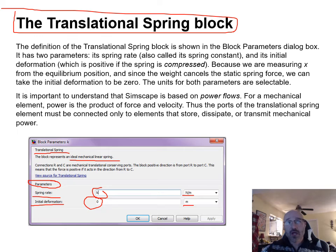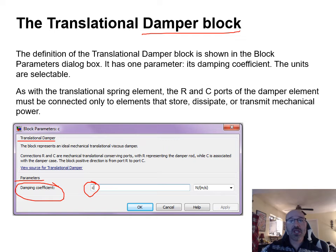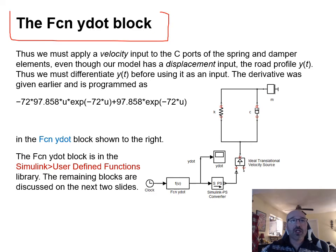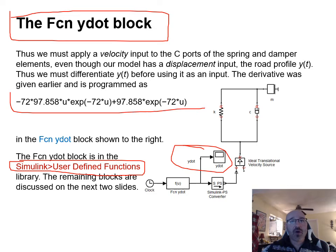For the translational damper block, enter the damping coefficient C and select the correct units. For the y-dot function block, this comes from Simulink's user-defined functions library — click and drag it in. Refer to the PDF slides for full details on each step as you build the complete diagram.